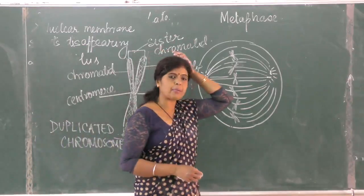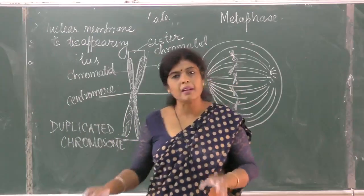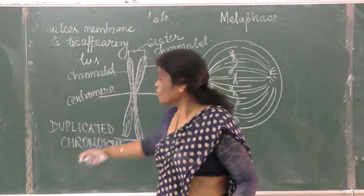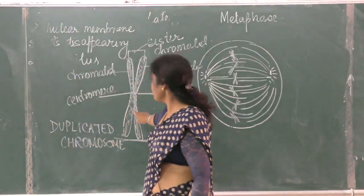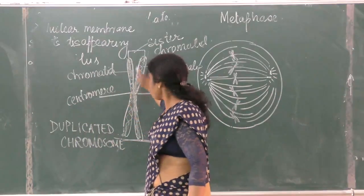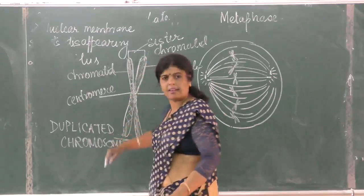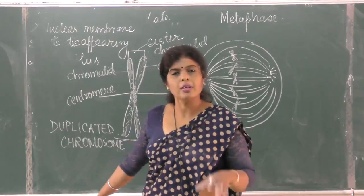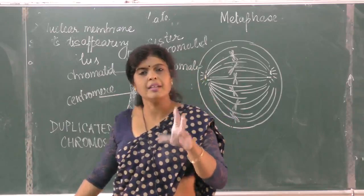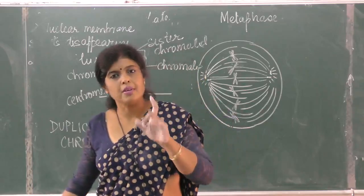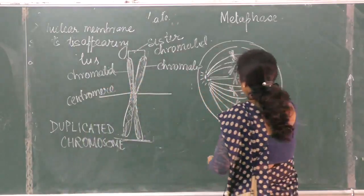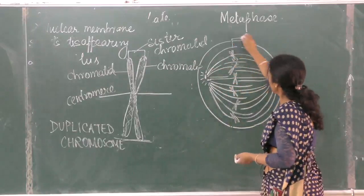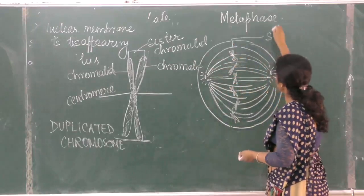In the exam, if they ask you to draw and label a duplicated chromosome, you will not be drawing the DNA — I have drawn it just to help you understand. The chromatid and centromere are labeled. Now, labeling is important: we write spindle fibers.